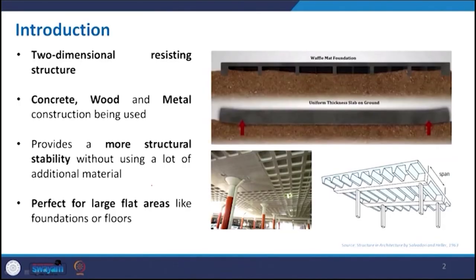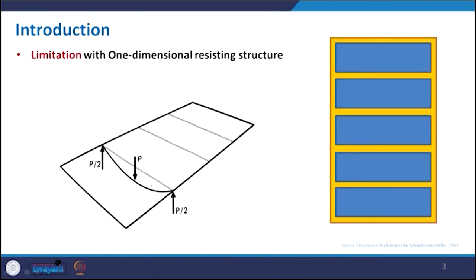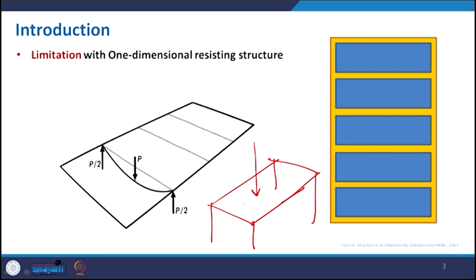Basically, as you can see in this slide, a grid is a two-dimensional resisting structure. To understand what exactly it is, we first need to know about the one-dimensional structure. Whenever you have a frame structure or flat slab structure, you have a number of columns and then the slab. The load applied on the slab is then distributed and transmitted to the column, and the column will transfer the load to the lower floor and then to the foundation.